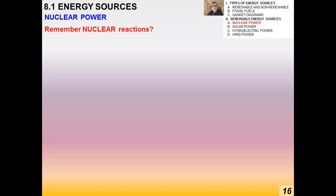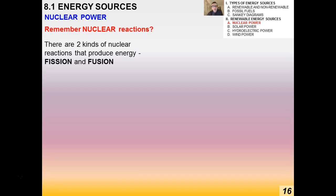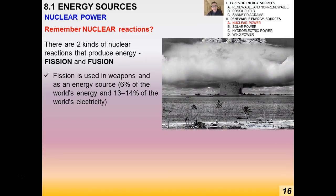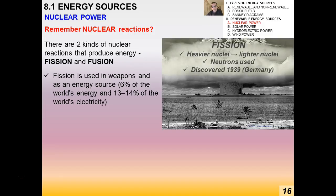The first one we're going to talk about is nuclear power. We've already talked about nuclear reactions, fission and fusion back in topic 7. Fusion naturally occurs in stars, and fission is the type of nuclear reaction used in weapons and as an energy source. Fission involves the transformation of heavy nuclei into lighter new nuclei using neutrons, and was discovered in 1939 by the Germans.